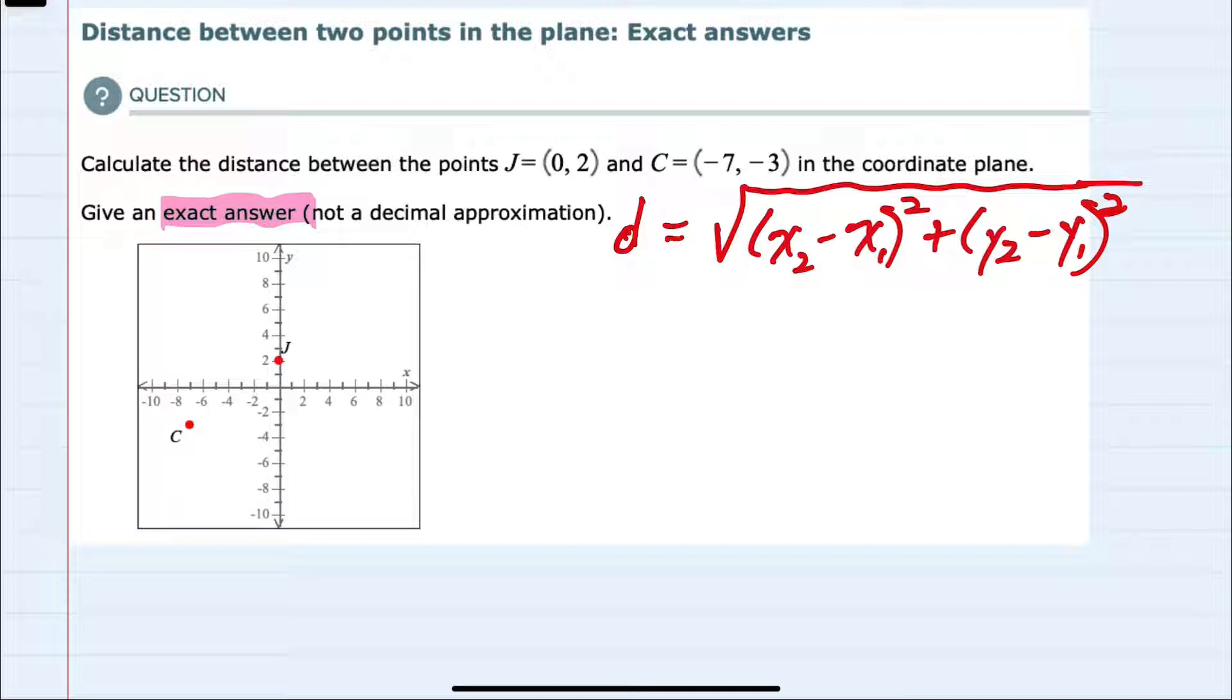Since we have our two points, we just need to decide which one is going to be point 1 and point 2. Since it doesn't matter, I will call the J point x1 and y1, and the C point x2 and y2.